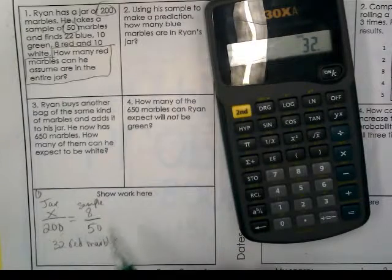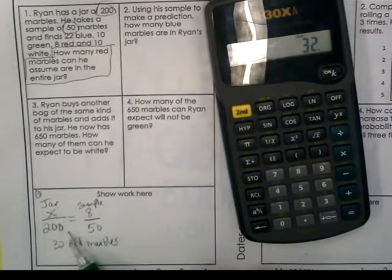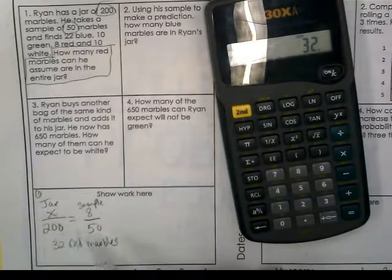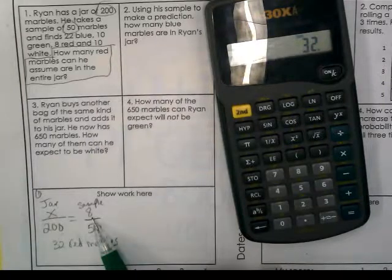Again, another way I could do this is look at the relationship between 50 and 200. There's 4 50s in 200. So if I just multiply 8 times 4, I would get 32.